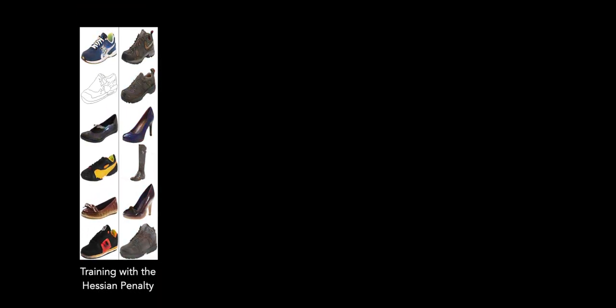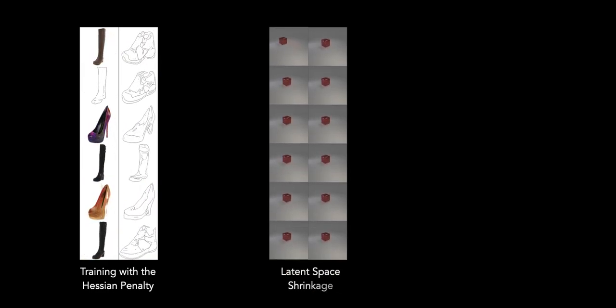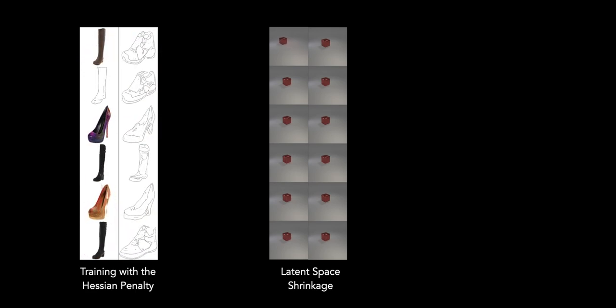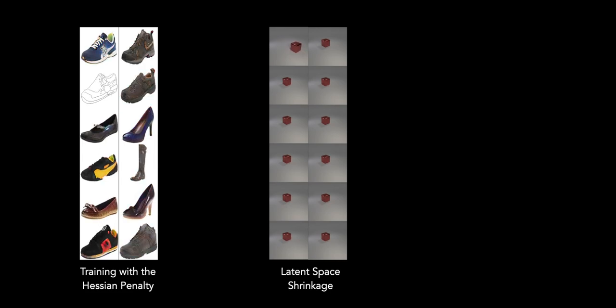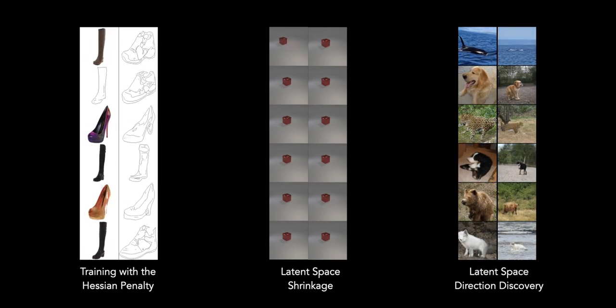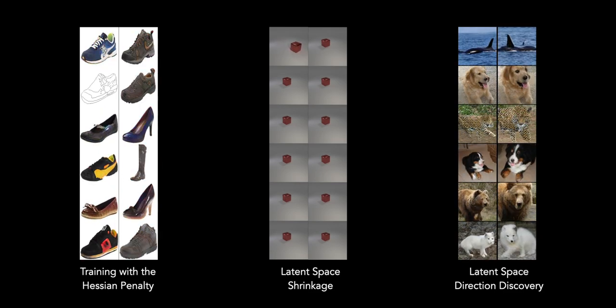First, we'll show visual results when training or fine-tuning progressive GAN with the Hessian penalty. Then, we'll show that the Hessian penalty can turn off unneeded z-components when a generator's latent space is over-parameterized. And finally, we'll show that the Hessian penalty can be extended to learn interpretable directions in a pre-trained generator's latent space, and we'll show results on BigGAN.